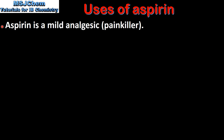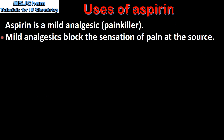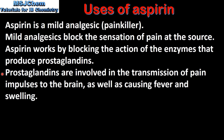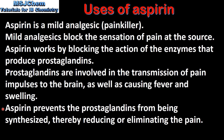Aspirin is a mild analgesic. Mild analgesics block the sensation of pain at the source. Aspirin works by blocking the action of the enzymes that produce prostaglandins. Prostaglandins are involved in the transmission of pain impulses to the brain as well as causing fever and swelling. Aspirin prevents the prostaglandins from being synthesized, thereby reducing or eliminating the pain.